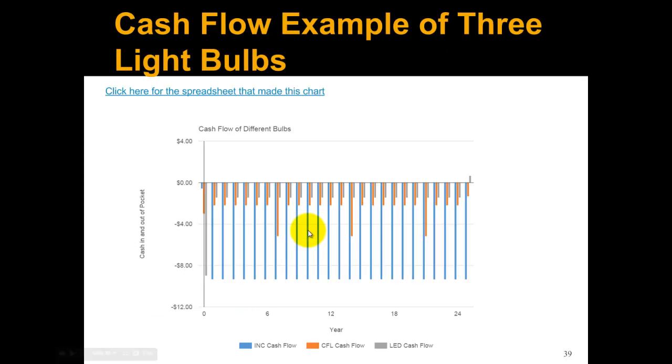So let's look at putting this all together in a cash flow diagram. This is a cash flow diagram of three different light bulbs: an incandescent, which is INC, a compact fluorescent, which is CFL, and a light emitting diode, which is LED. What you can see is the first year, this is year zero in the cash flow diagram, is when we buy the light bulb. So the incandescent has a relatively low cost to buy, the CFL has a middle cost to buy, and the LED is really expensive to purchase. Then every other year—year one, year two, year three—the incandescent is expensive to run, the CFL is less expensive, and LED is less expensive.